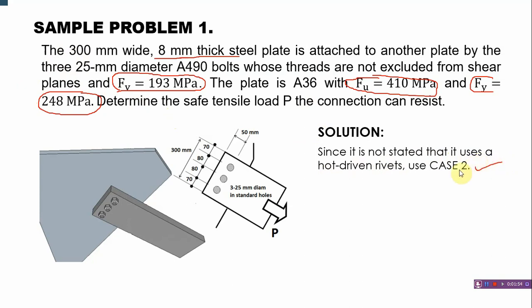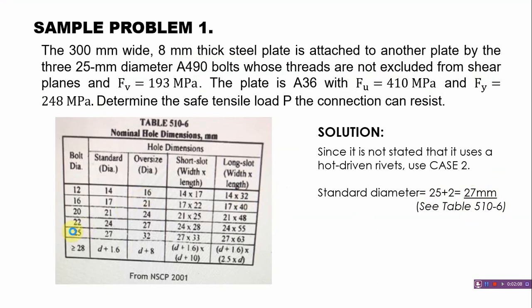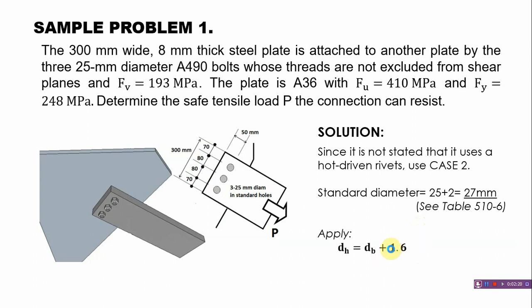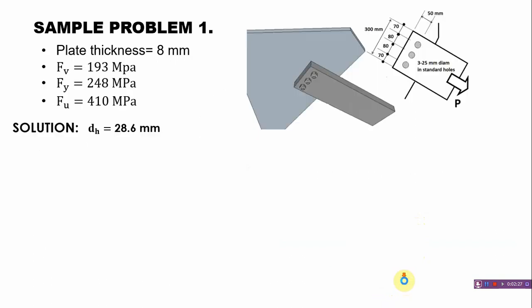Case 2 has two steps. First, we need to get the standard diameter, which is 25 plus 2, equals 27 mm. This is in table 5.10-6. Then after that, we add 1.6: D_h = 27 + 1.6 = 28.6 mm.